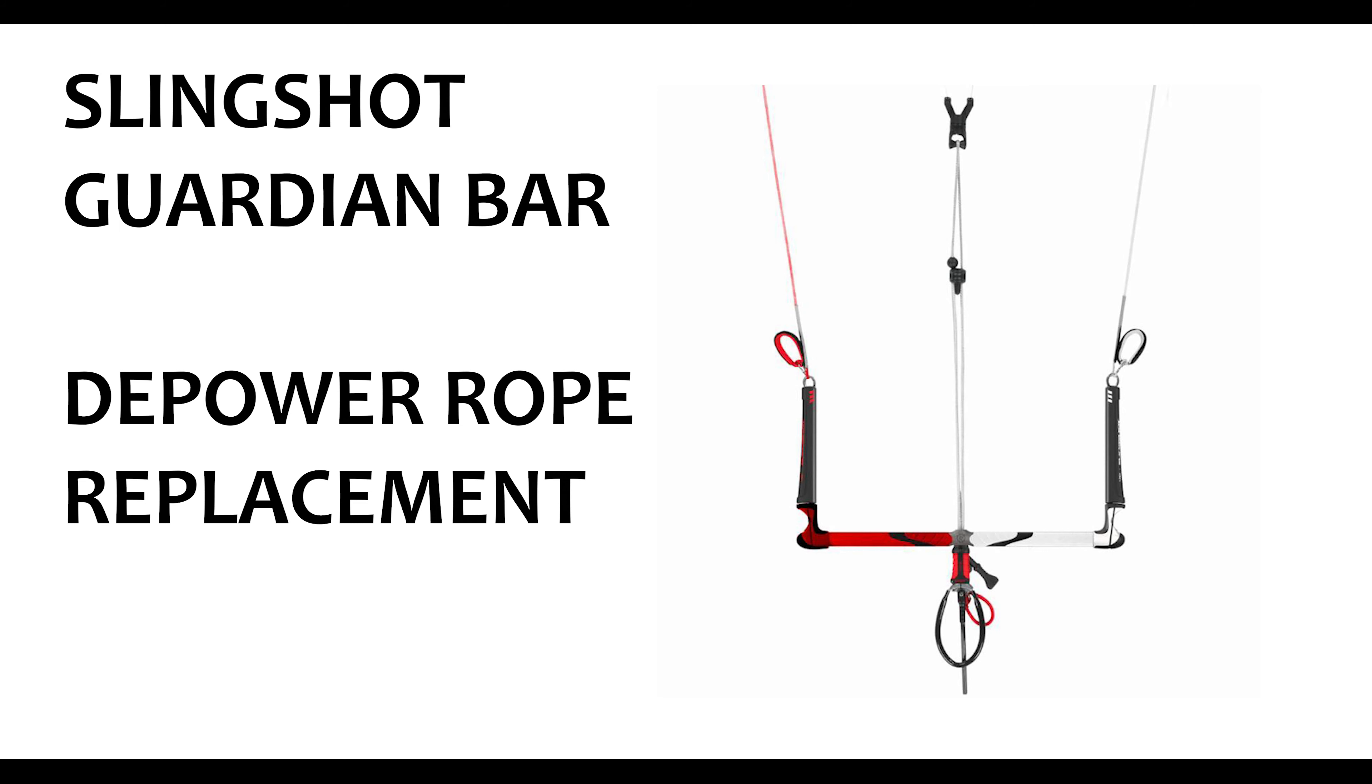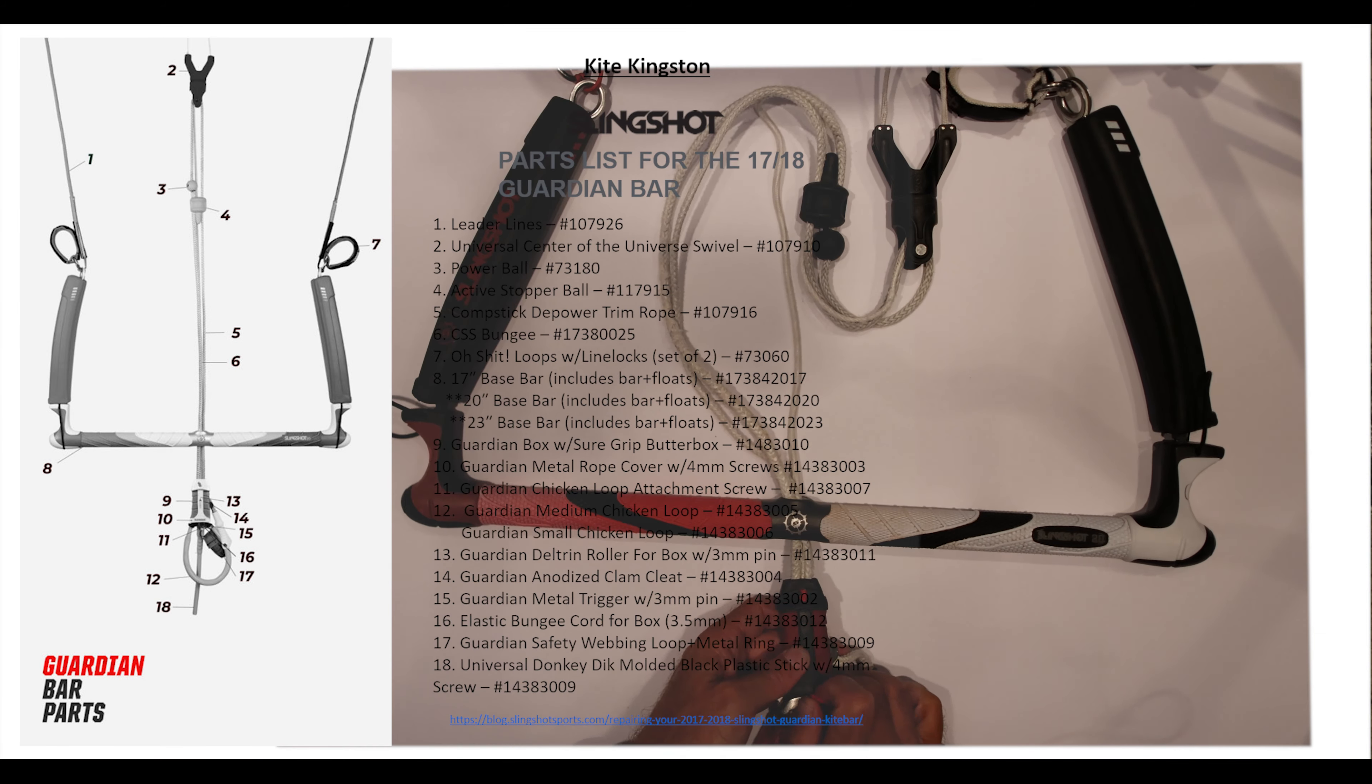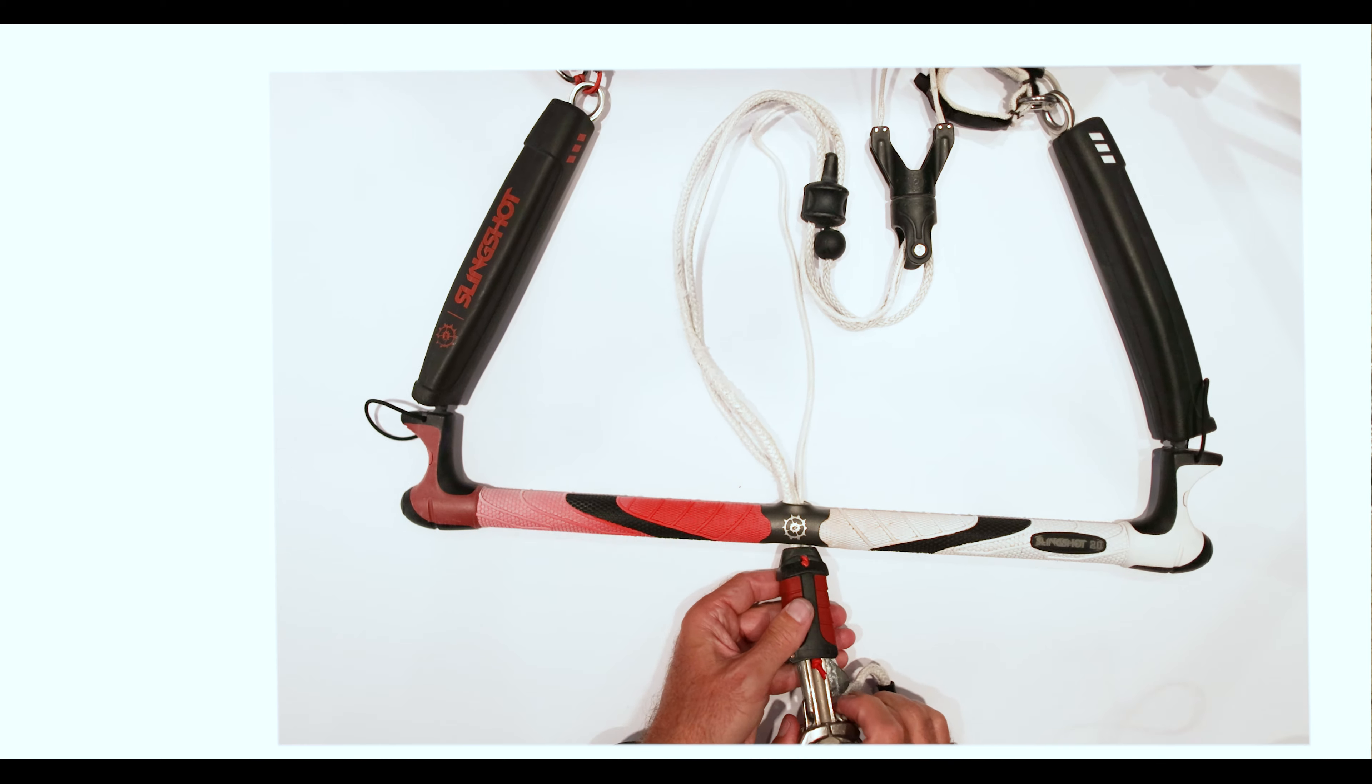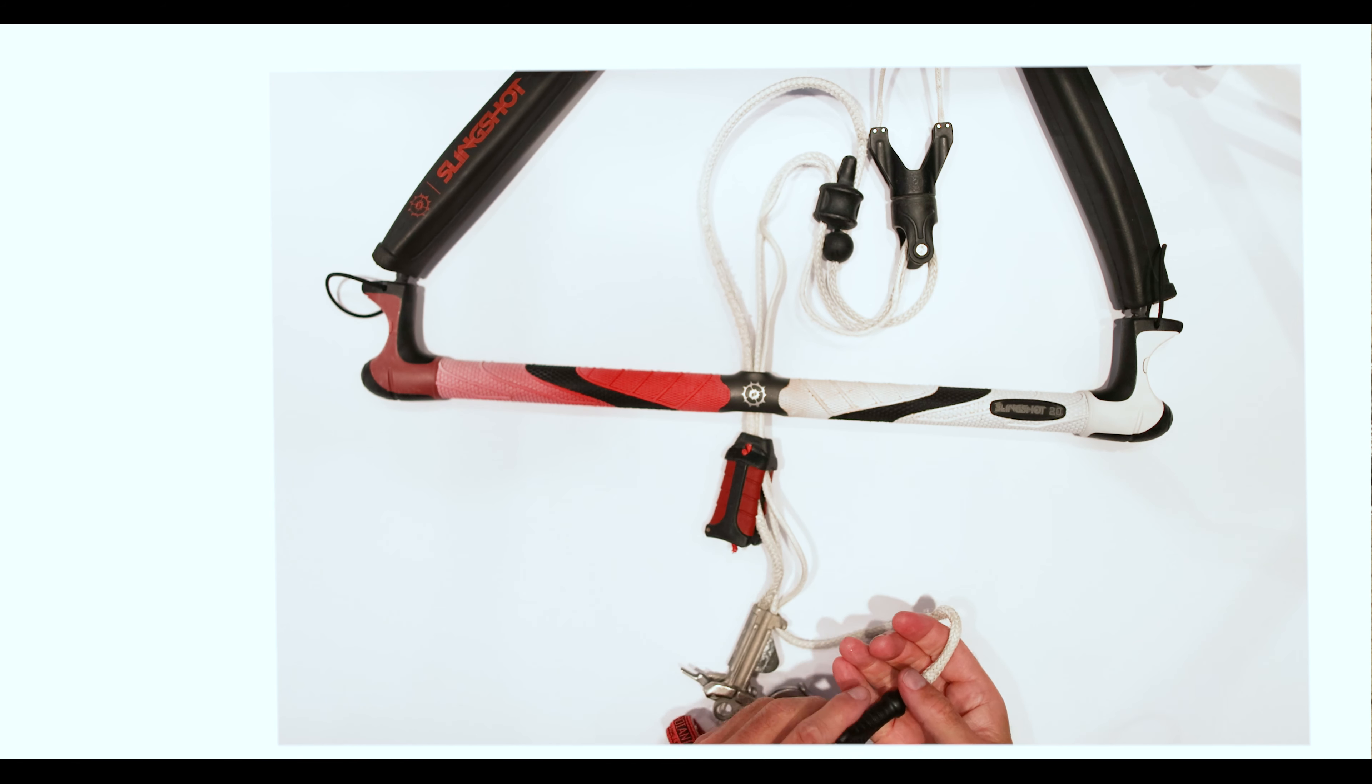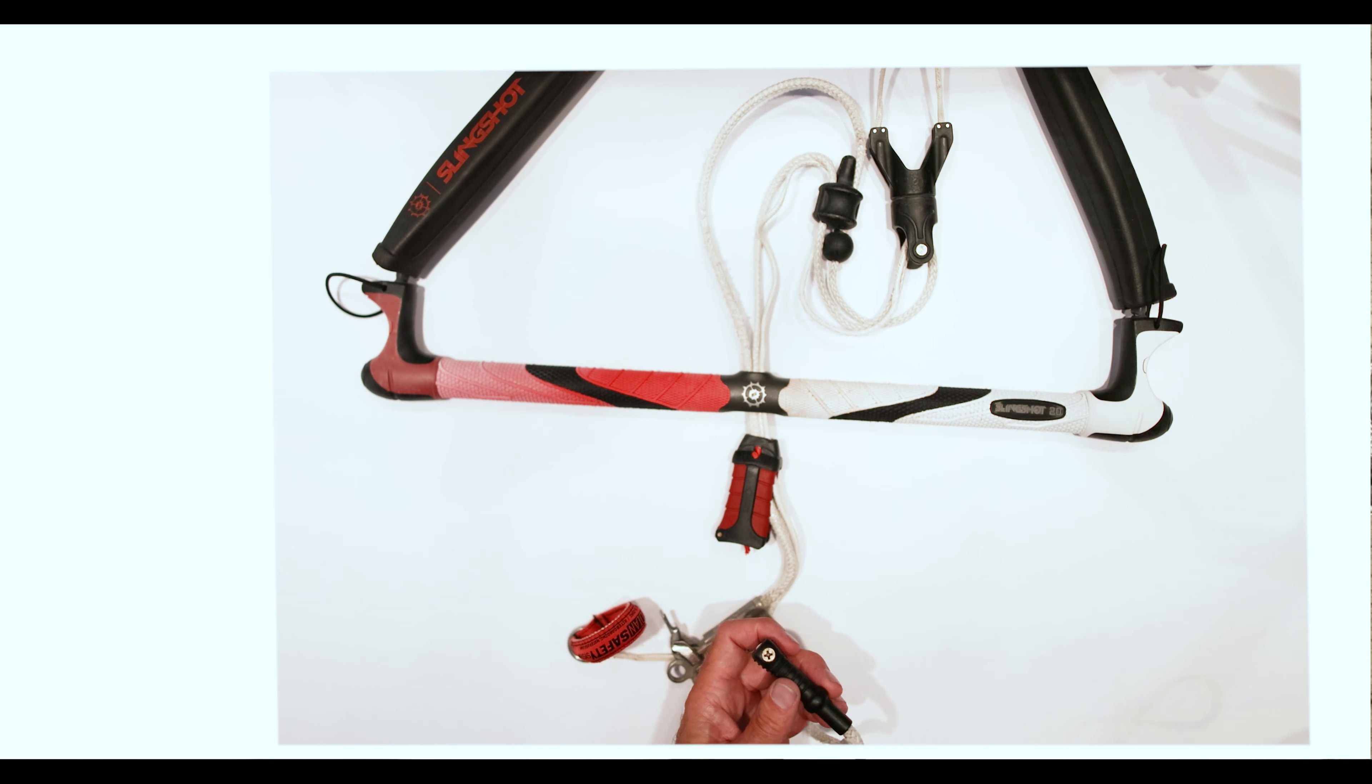Okay, so we are going to take apart and replace the depower line on a Slingshot Guardian bar. First thing I'm going to do is open up the depower line like this, pull this out of the cleat.